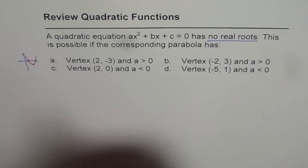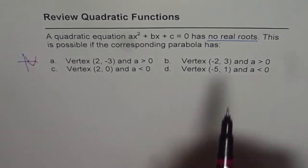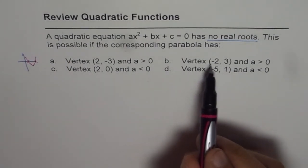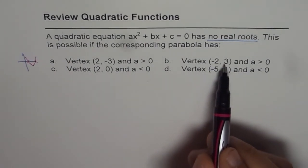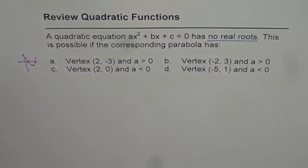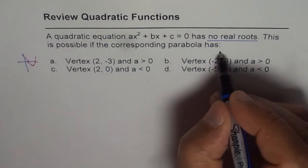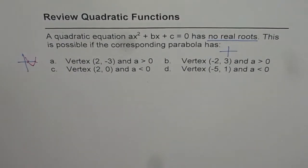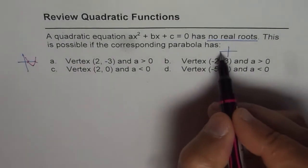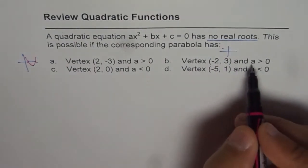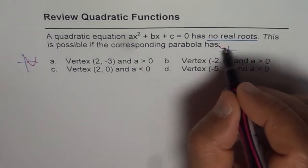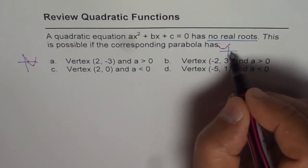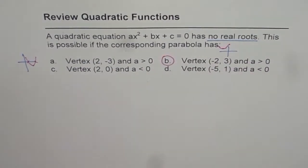This one has vertex (-2, 3). That means in this particular case we have a situation like (-2, 3). a > 0 means it opens upwards. Well, no real solutions. That is the correct answer. Do you see that?